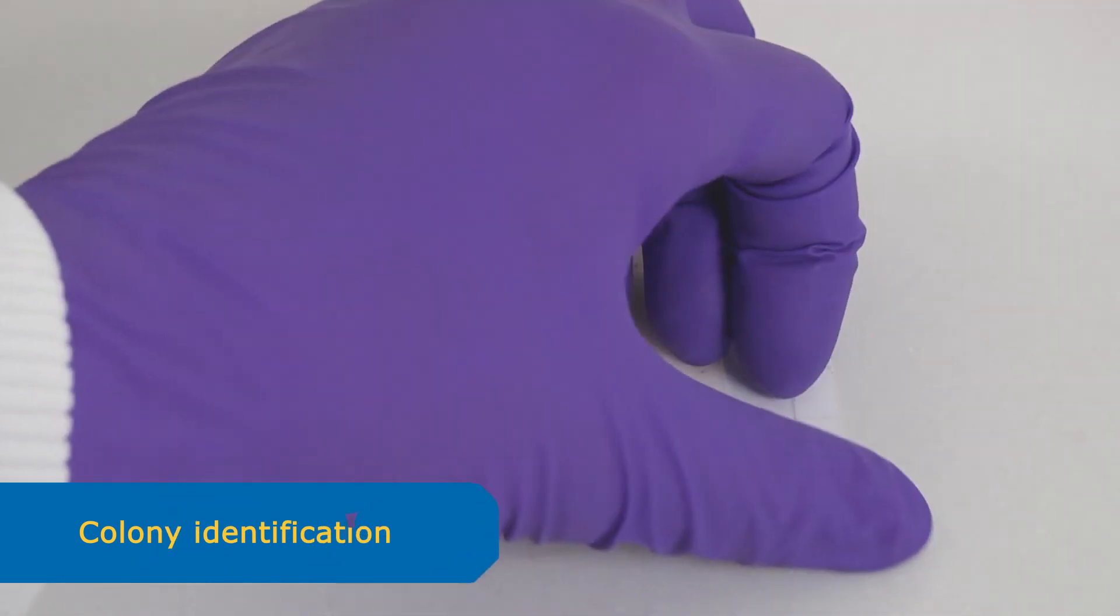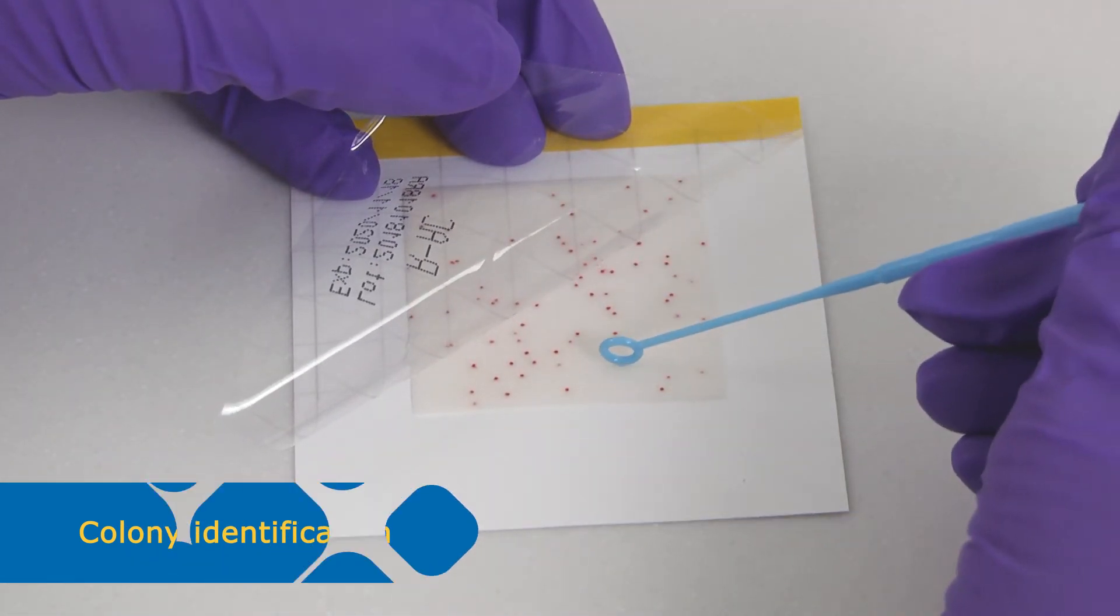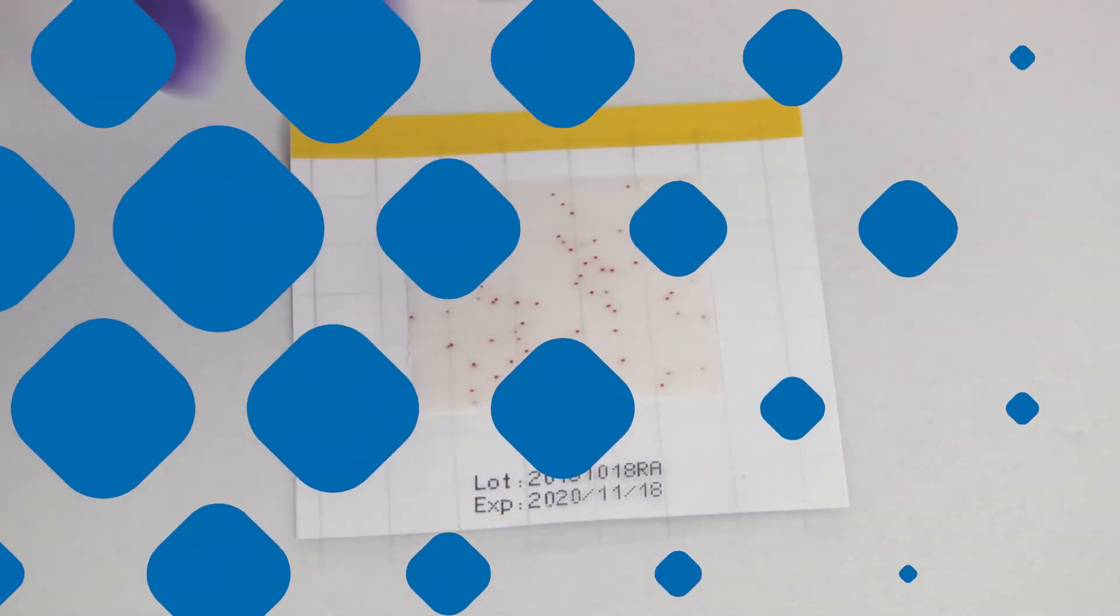For identification, you can pick up a colony using a sterile needle by scratching the pad. The pad will remain stained.